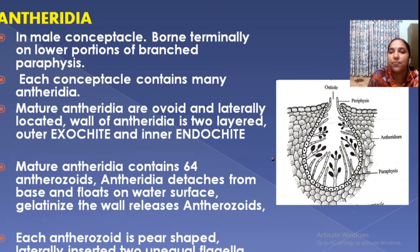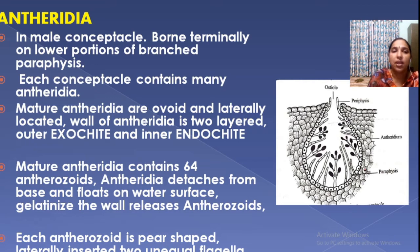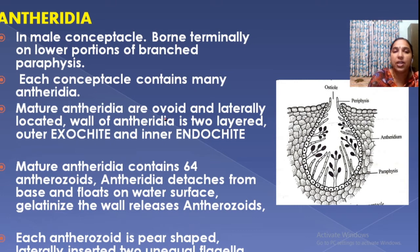The first is the antheridia — this is the male conceptacle. The ostiole is present; at the mouth is periphyses and at the lower portion is paraphyses. Each conceptacle contains many antheridia. The wall of each antheridium has two layers: the outer exine and the inner endine.